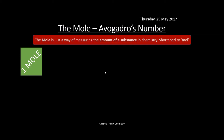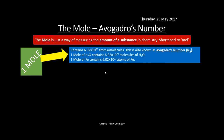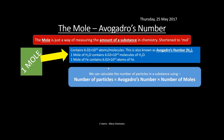The mole is a way of measuring an amount of substance, shortened to 'mol'. One mole of any substance contains 6.02 × 10²³ atoms or molecules — known as Avogadro's number (Nₐ). So one mole of water contains 6.02 × 10²³ molecules of water, and one mole of iron contains 6.02 × 10²³ atoms of iron. The number of particles = Avogadro's number × number of moles.